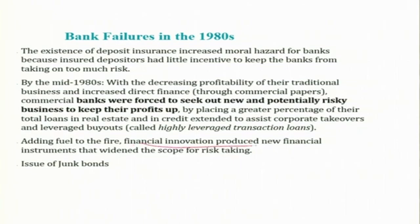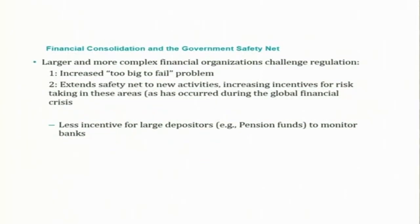In addition, financial innovations produced new instruments that widened the scope of risk-taking. Several banks issued junk bonds as part of their financial innovations, again on the backdrop of the perception that if something goes wrong, the government will bail them out. Financial consolidation and the government safety net also contributed to bank failure. Let us conclude this session here and continue this discussion in the next session. Thank you.